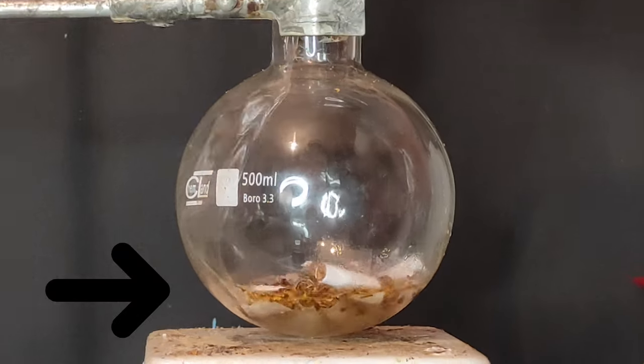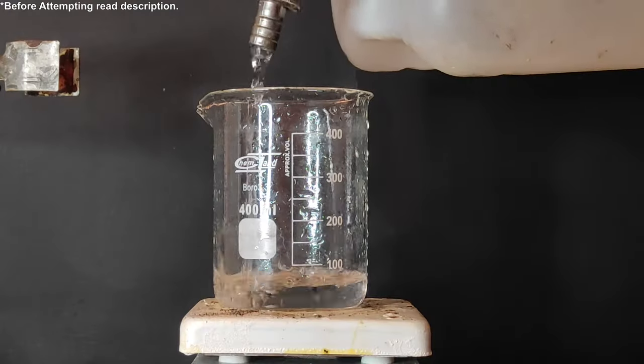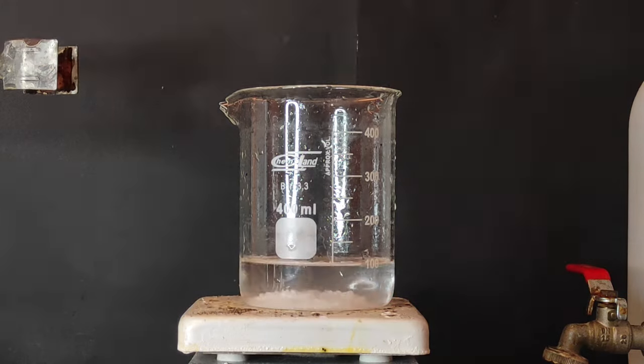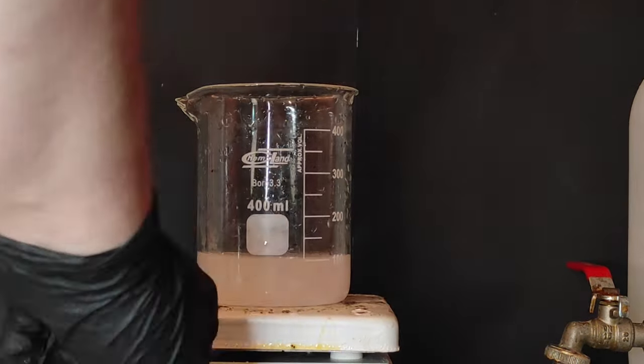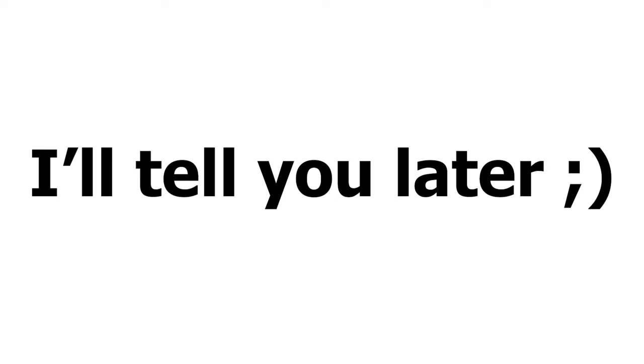This video I'll be extracting some nicotine from cigarettes. To start I've made a 10% solution of sodium hydroxide. This makes an extremely alkaline solution which will add to the cigarettes. Why, I'll tell you later.